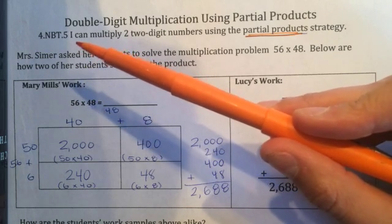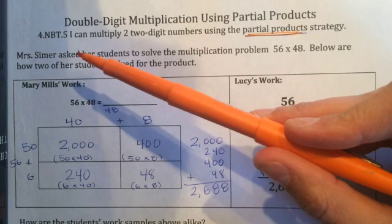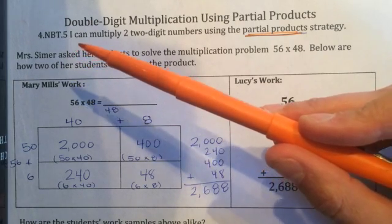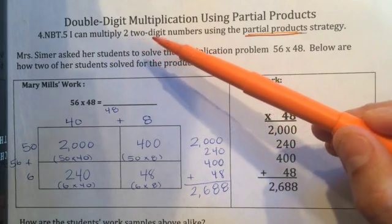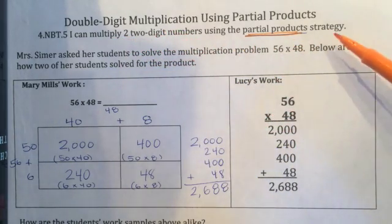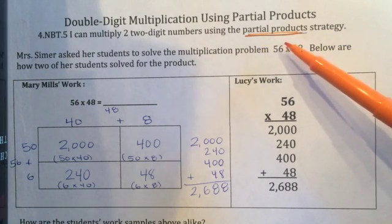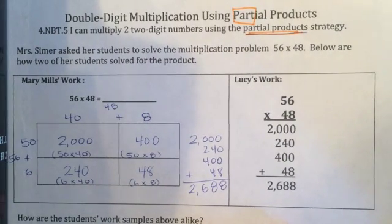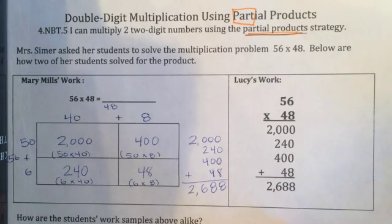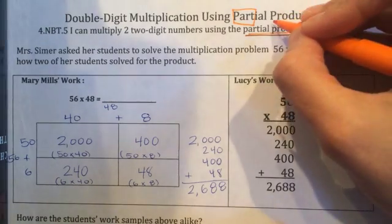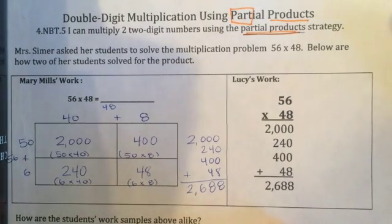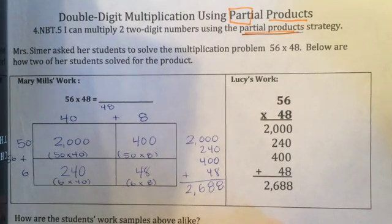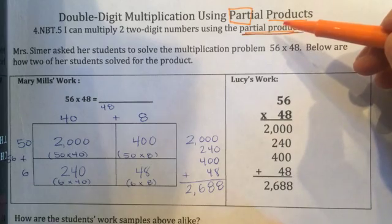Let's read it together: 'I can multiply two two-digit numbers using the partial products strategy.' The different part today is that we're going to use partial products. I want you to take your pencil and box out the word 'partial' — partial makes me think of 'part,' so it's going to be part of the product. A product, if you remember, is the answer to a multiplication problem. Partial products gives us part of the answer and then we find the final answer.